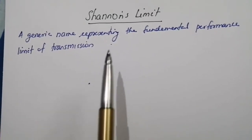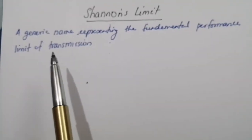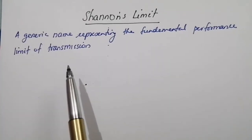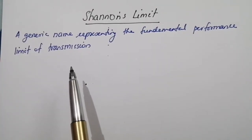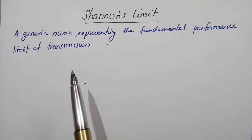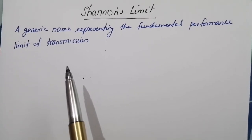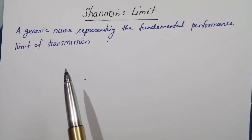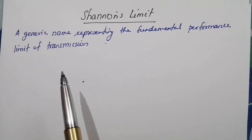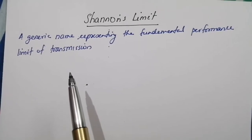Now, we will discuss Shannon's limit. Shannon's limit is a generic name representing the fundamental performance limit of transmission. In short, it is the maximum rate that you can send data through a channel with a given bandwidth and a given noise level. If you exceed the channel capacity, you can expect to have some data loss.